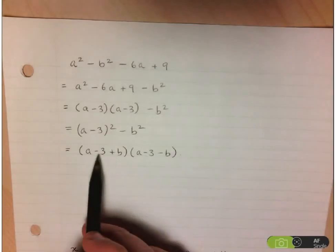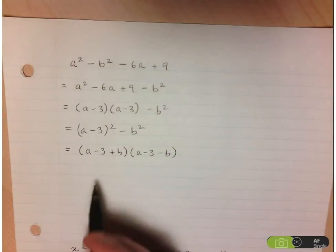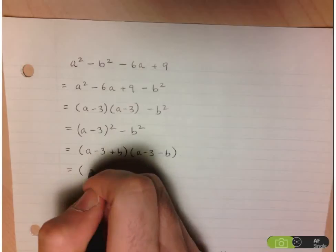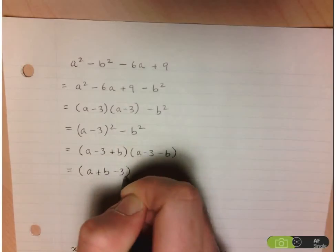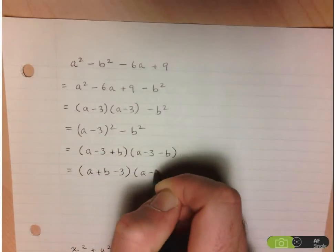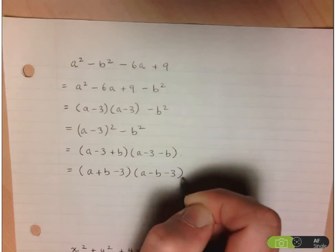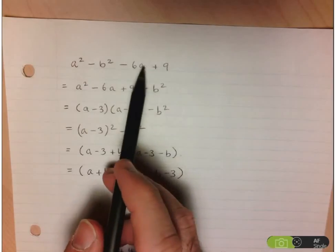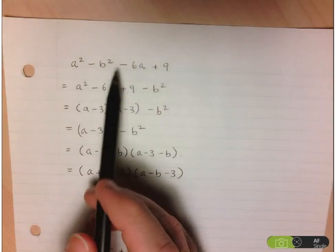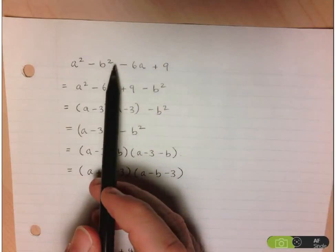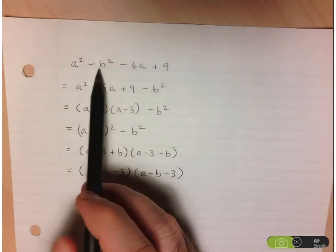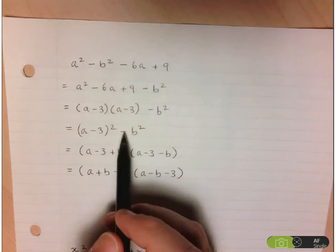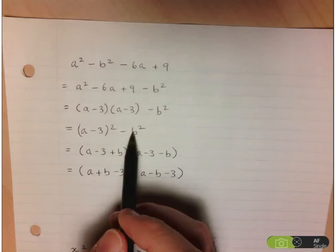Now normally by convention we'd like to have the variables in the front, so I'm just going to rearrange each bracket. I'll have a plus b minus 3, times a minus b minus 3. There you have it — the factorization of this expression. It was again about figuring out a pattern, and in particular noticing the trinomial we could form, and then from there noticing that we had a difference of squares.